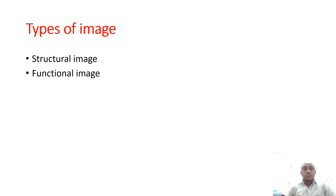There are two types of images. One is the structural image, one is the functional image. In structural image, you can see the normal structures — gray matter, white matter, vascular structures, everything.